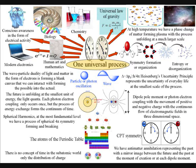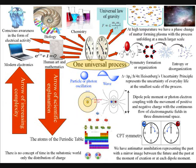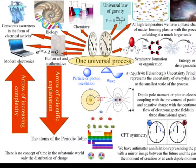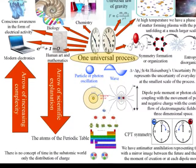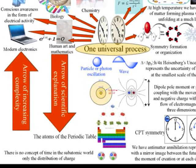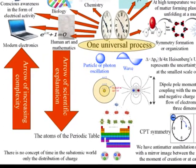This can be explained using this diagram, with an arrow of scientific explanation pointing down towards the atoms of the periodic table, and an arrow of increasing complexity pointing up towards the great complexity and diversity of life.